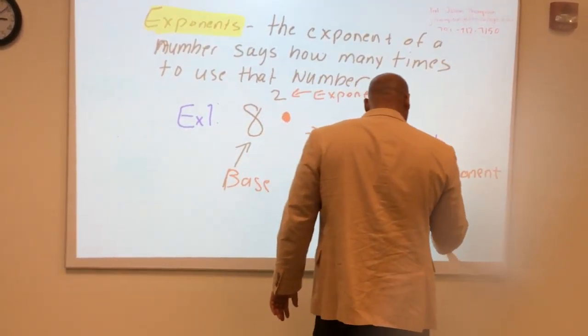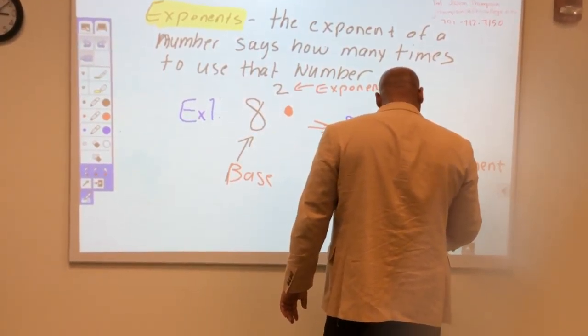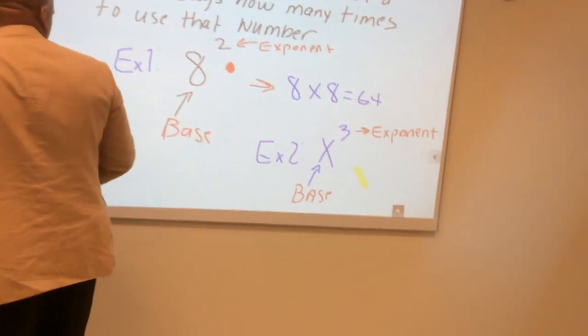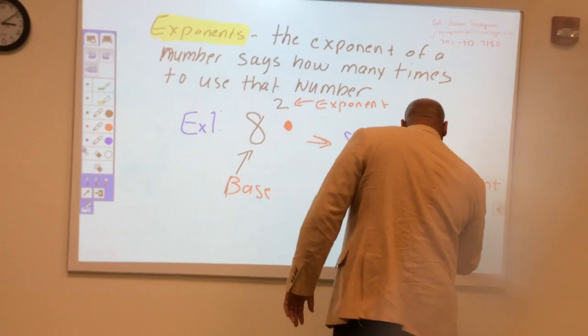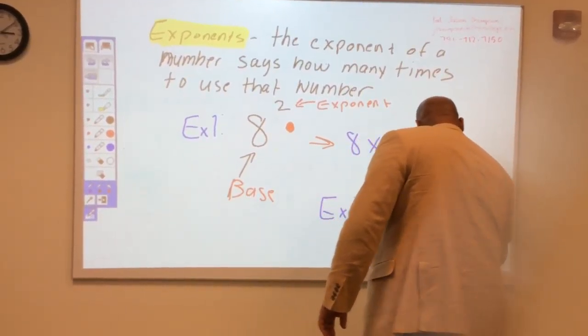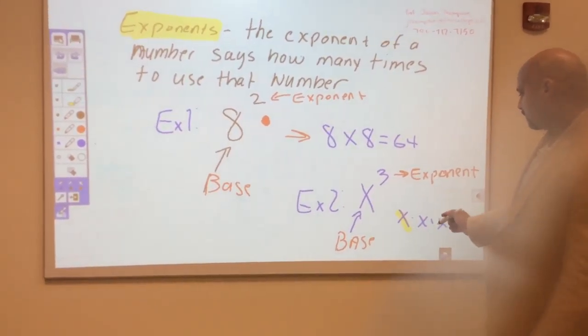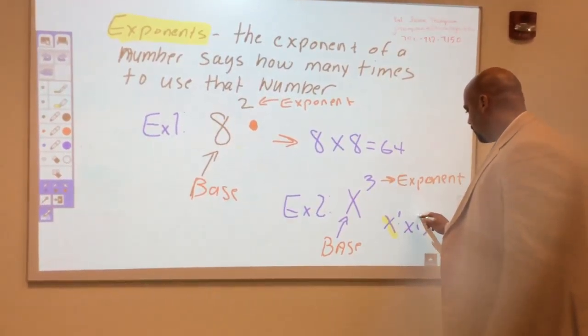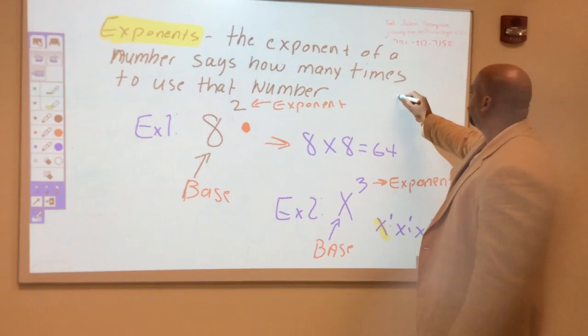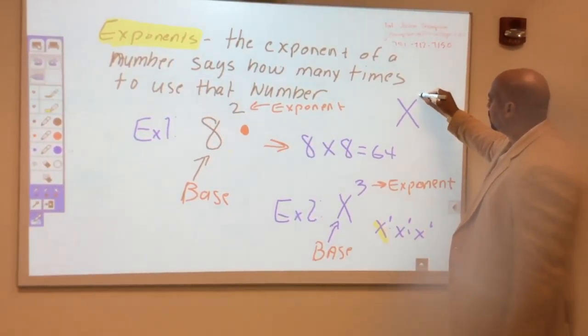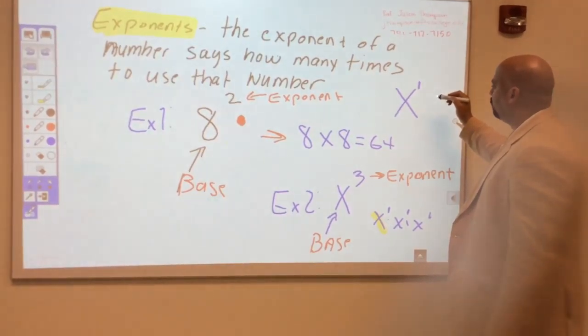If we had to do it, it would be x to the 3rd because this is understood to be a power of 1. Whenever you see a variable with nothing on it, it's always understood to the power of 1.